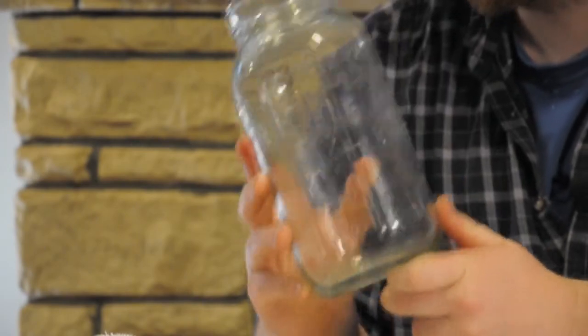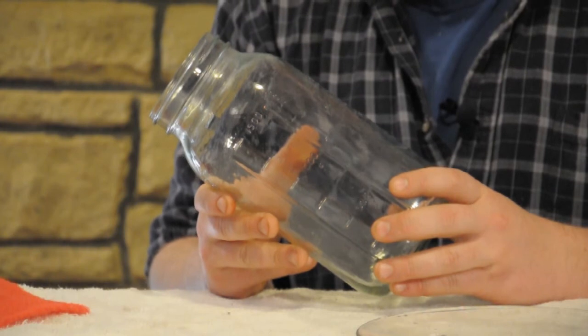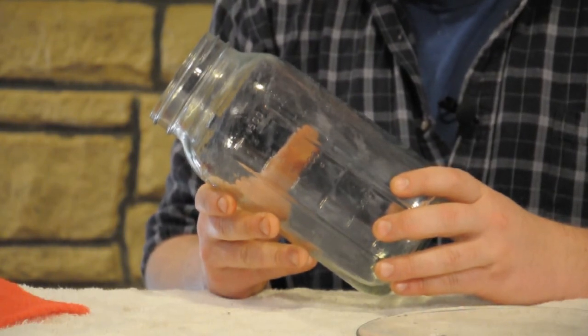And there you have it. I'm Joshua Clement with ID Contractors. That's how you can easily remove a rust ring from a canning jar.